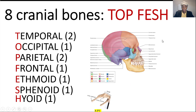Let's talk about the eight cranial bones. There are temporal bones, occipital bone, parietal bones, frontal bone, ethmoid, sphenoid, and hyoid.